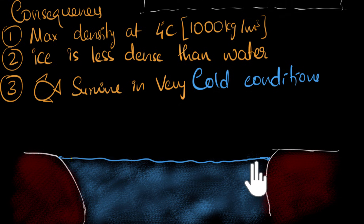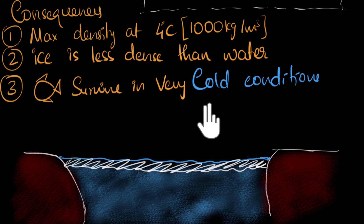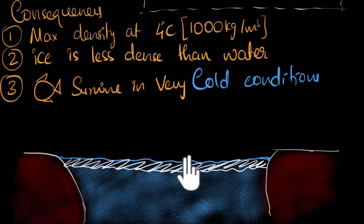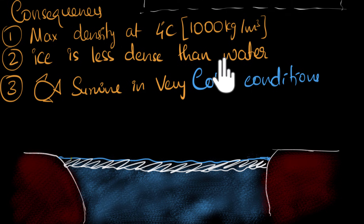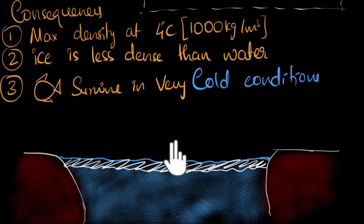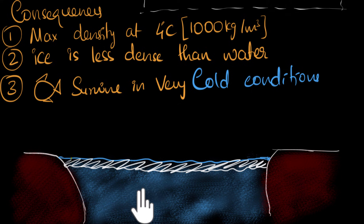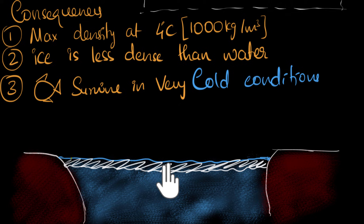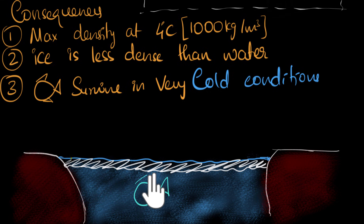The top layer of water, which is in direct contact with the surrounding, will end up freezing and becoming ice. If there were no anomalous expansion, ice would be more dense than water, ice would sink, and the whole water body would solidify. But because of the anomalous behavior, ice is less dense than water, so the top layer doesn't sink — it floats, and it insulates the bottom water. This is why oceans and lakes in very cold places don't freeze up. Only the top layer freezes, acting like an insulator and keeping the water below warm — making aquatic life able to survive.